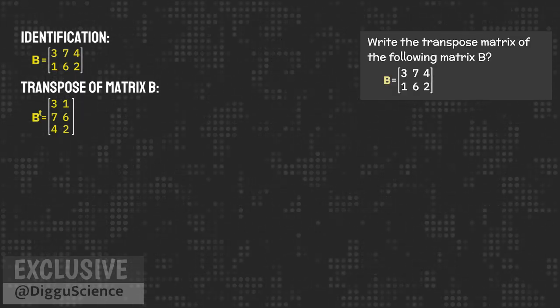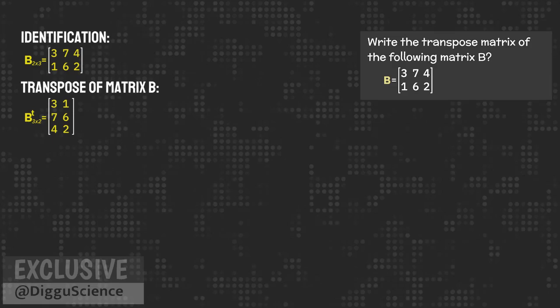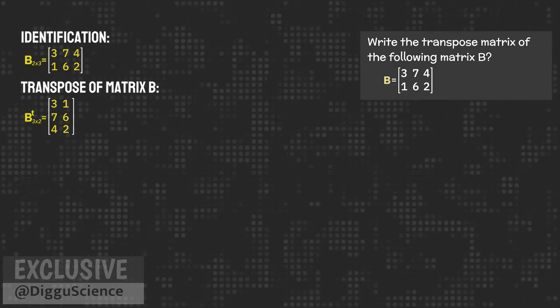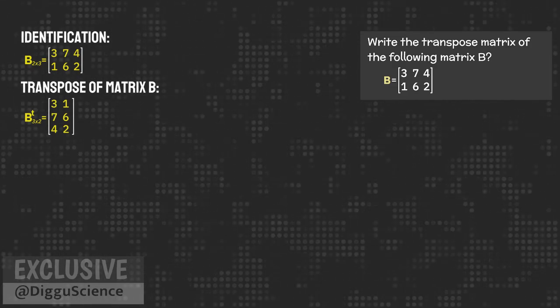Matrix B, which was originally a matrix of order 2 by 3, after the transpose process, changes into a matrix of order 3 by 2.